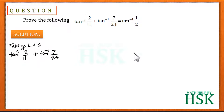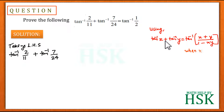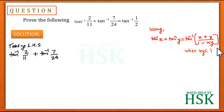We apply the formula: tan⁻¹(x) + tan⁻¹(y) = tan⁻¹((x + y) / (1 − xy)), when xy is less than 1.